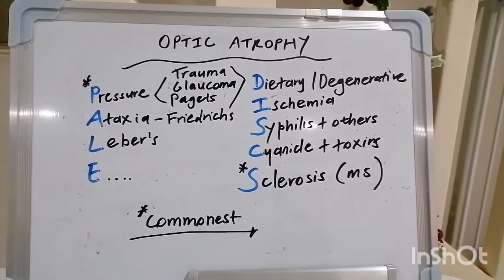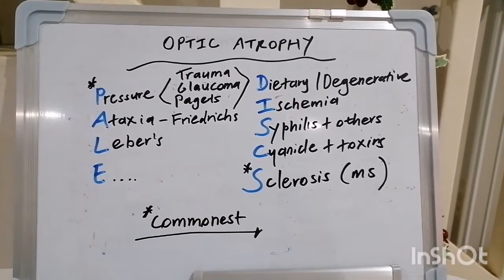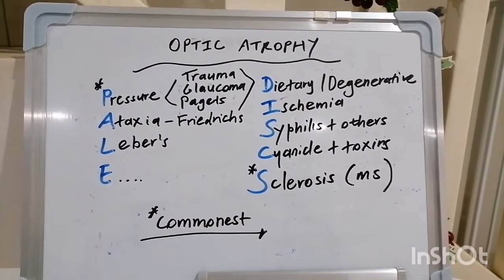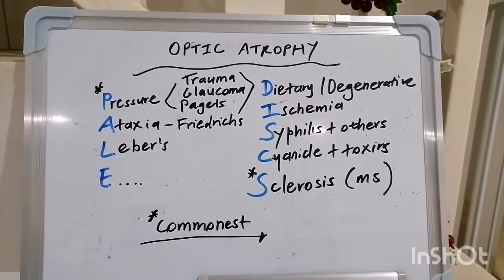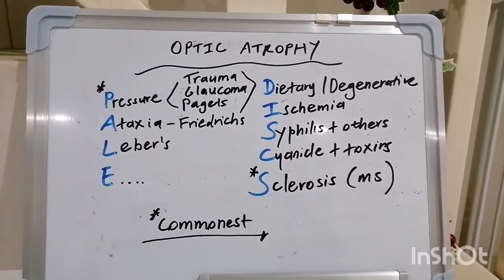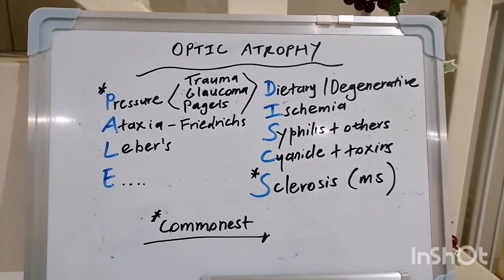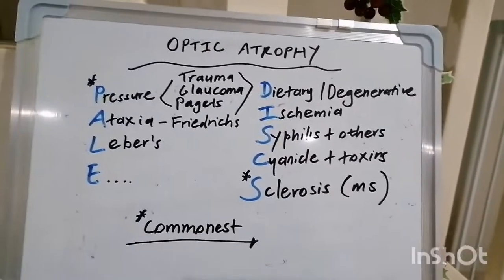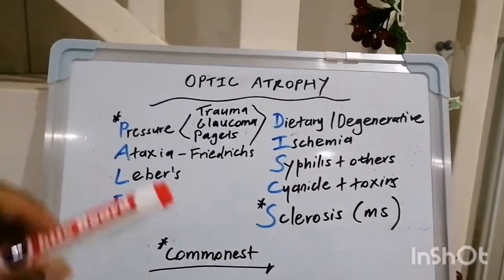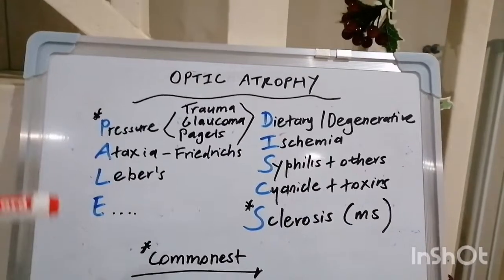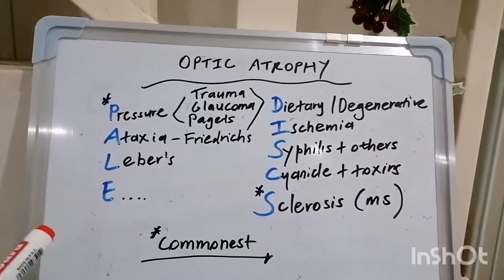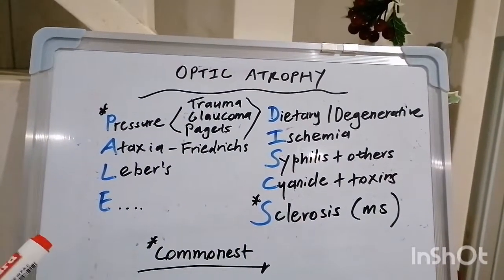What did the left eye say to the right eye? He said, there's something between us that smells. So the mnemonic this morning is PALE DISCS — that's how we remember the causes of optic atrophy.